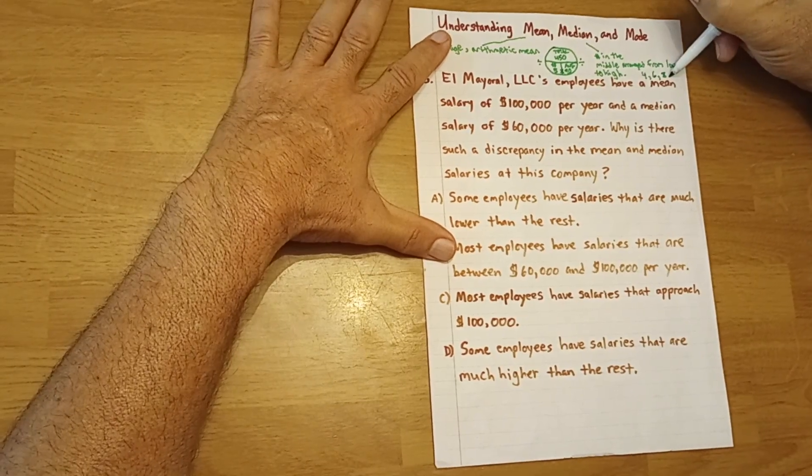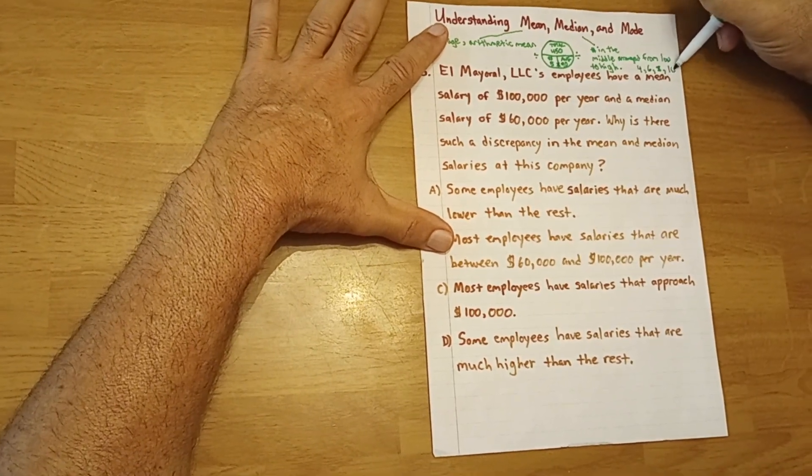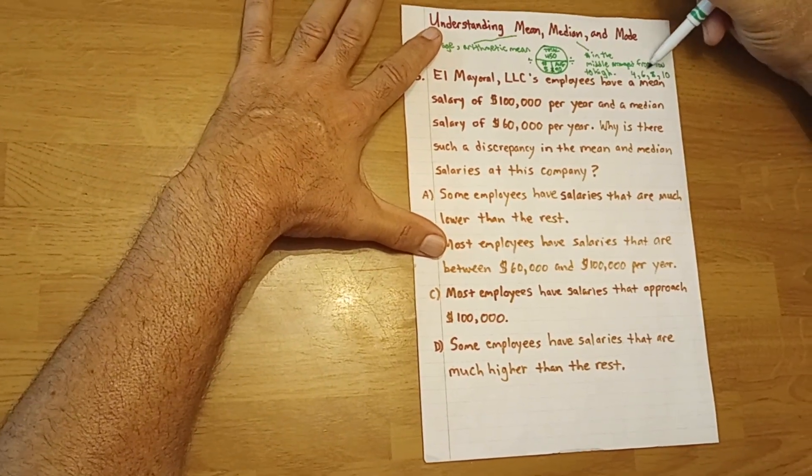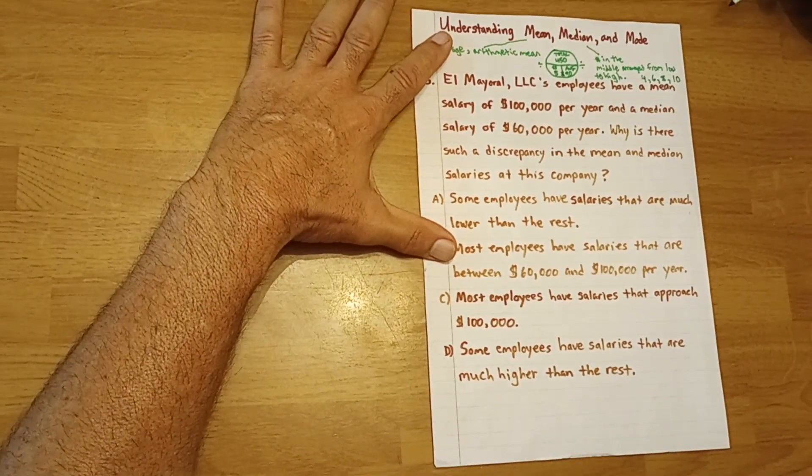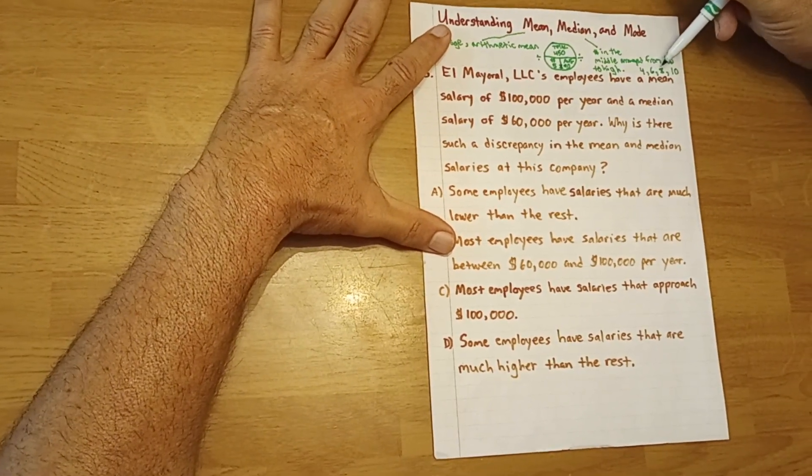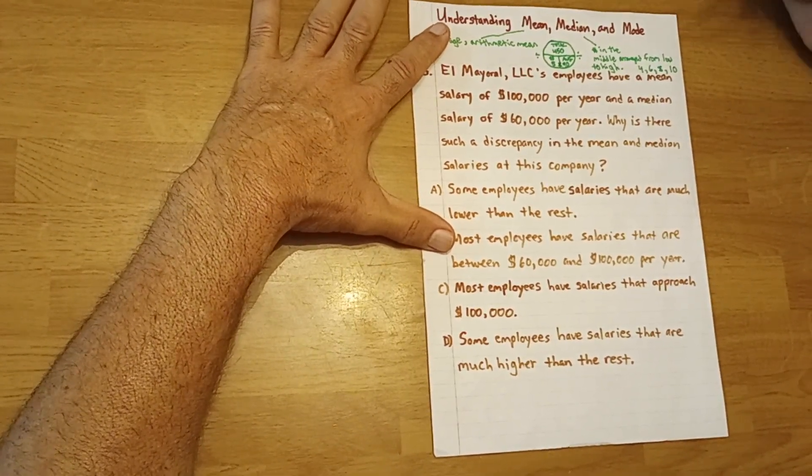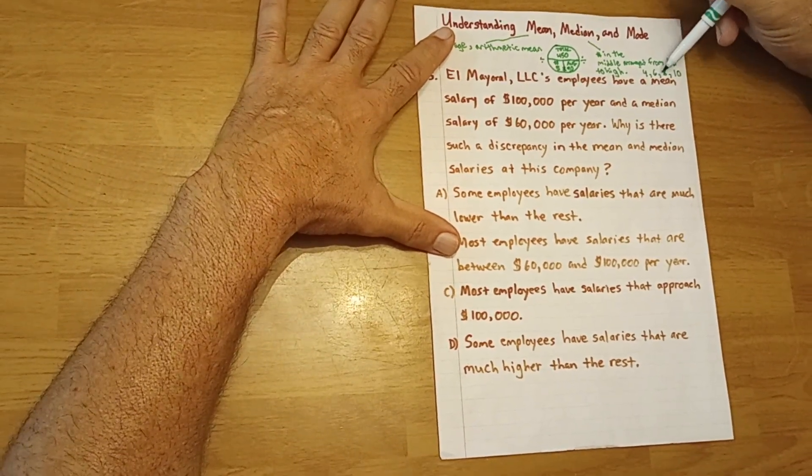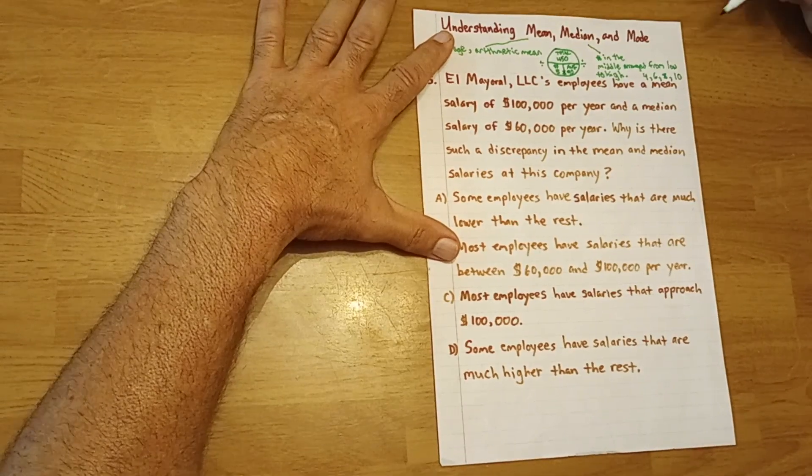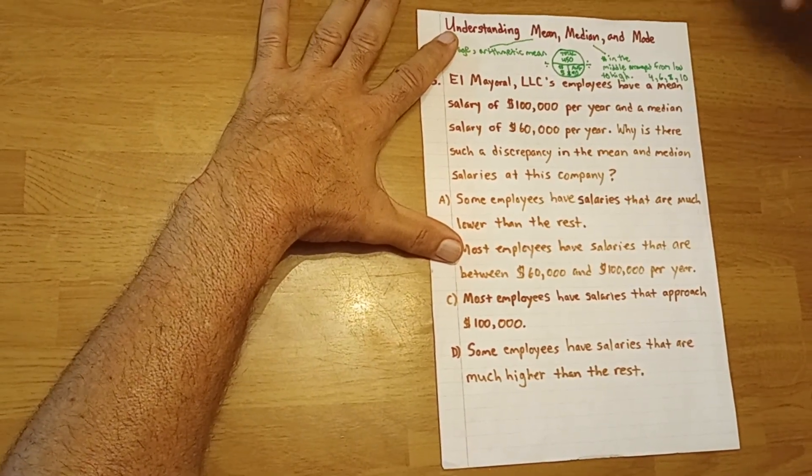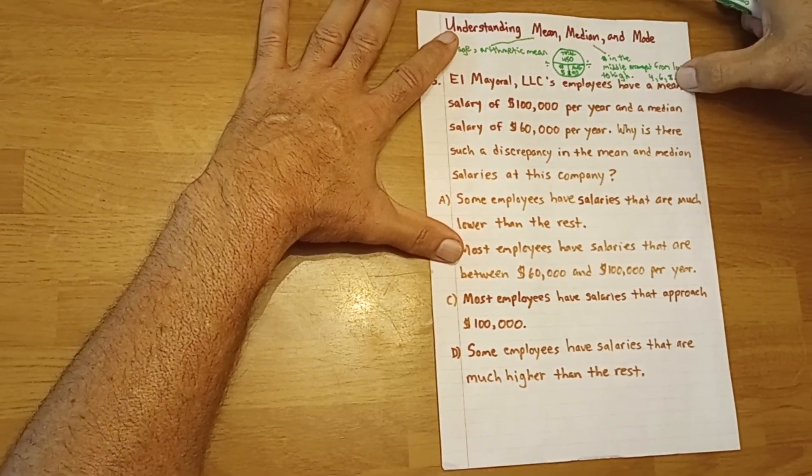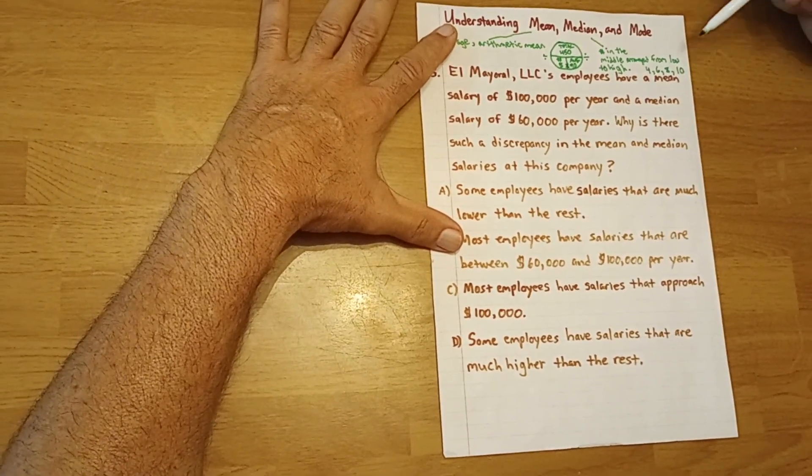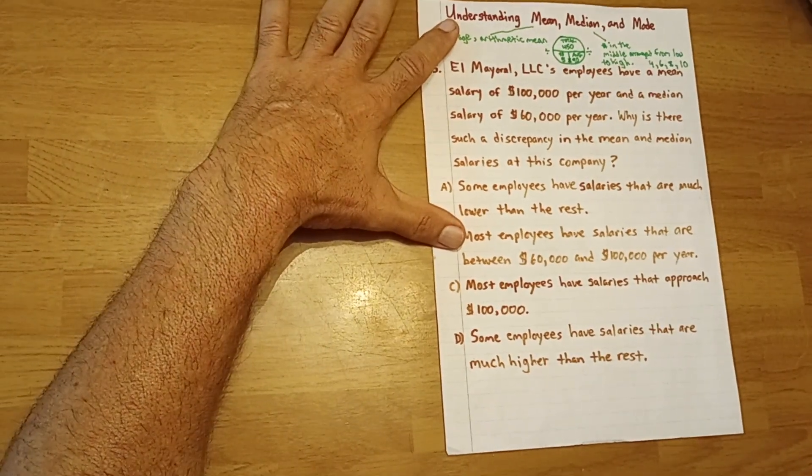But if you have an even number of numbers, let's add 10 to this list, the median is going to be the average of the two middle numbers. So the average of 6 plus 8 is 7, because 6 plus 8 is 14, 14 divided by the number of numbers, which is 2, would give us 7. So again, if we have 4, 6, 8 as our set, the median is 6. If we have 4, 6, 8, 10, it's the average of the middle two numbers, which would be 7.